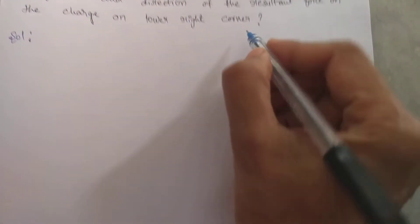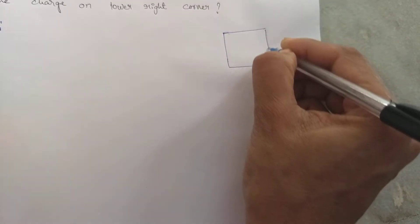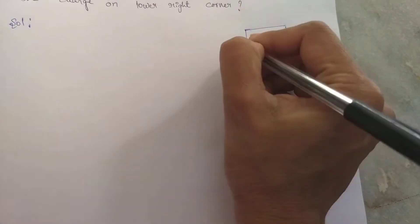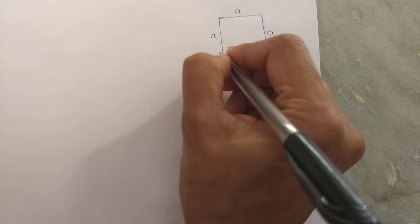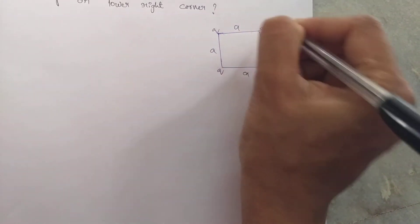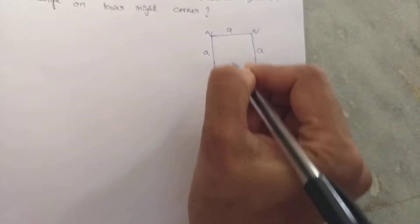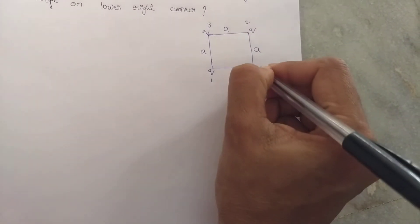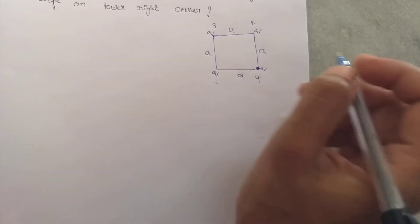So here they have given a square. I am drawing a square with side A — this is A, this is also A, and this is also A. Here Q, here also Q, here also Q, and here also Q. I am giving the numbers: this is the first charge, this is the second charge, this is the third charge, and this one is the fourth. The lower right corner is this one, so here you have to find out the force.